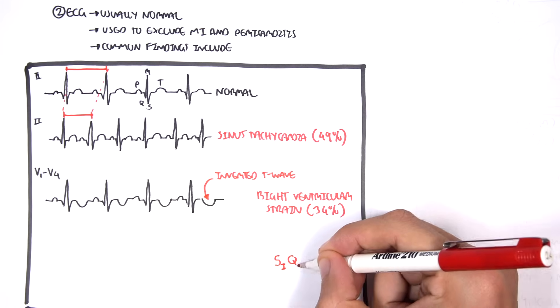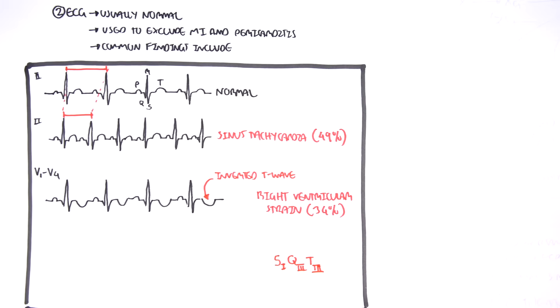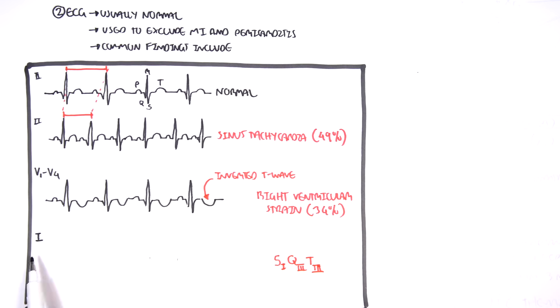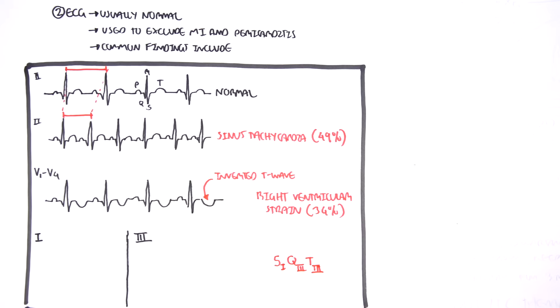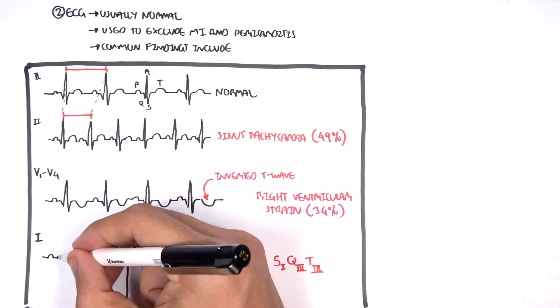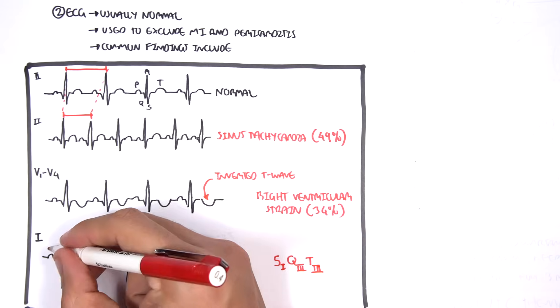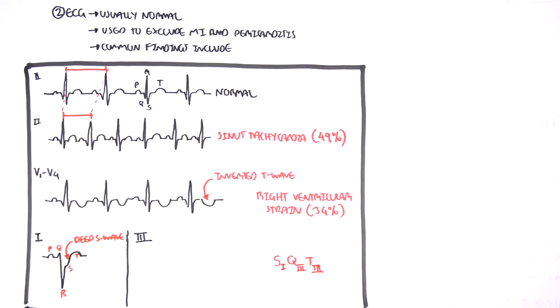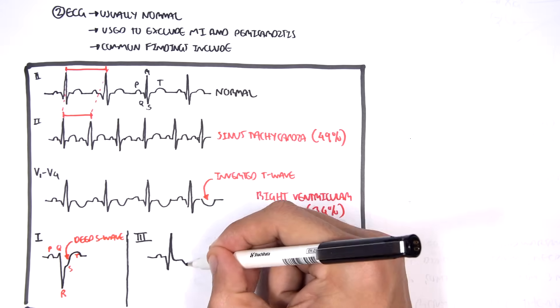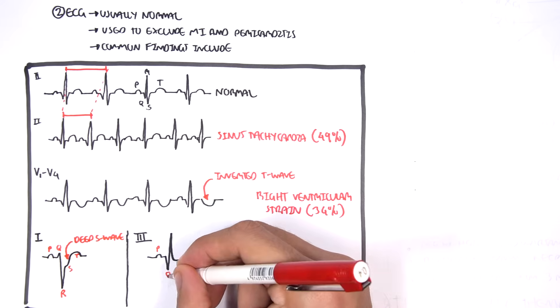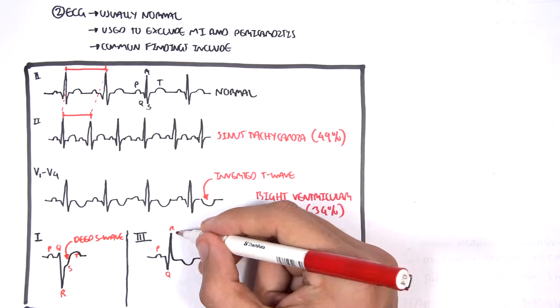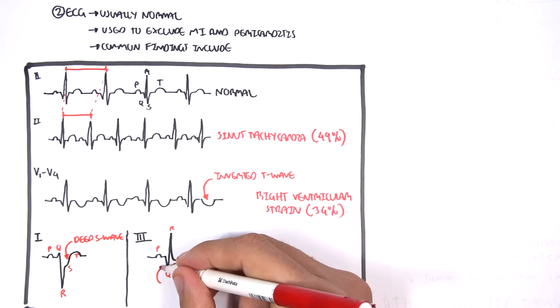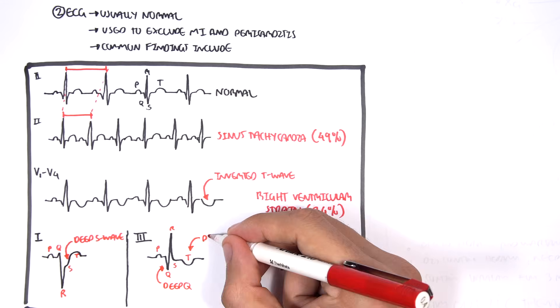Another thing you can see in ECG is what's known as S1Q3T3. You're essentially looking at leads one and leads three. What you're seeing is deep versions of this wave in that lead. For example, for lead one, you see a deep S wave, so the S wave is deeper than usual. In leads three, you see a deep Q wave and you see a deep T wave.